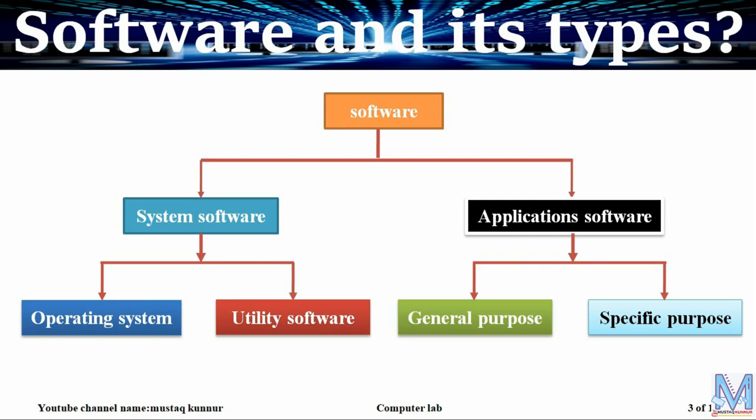System software is further categorized into two types: operating system and utility software. Application software is categorized into two types: general purpose and specific purpose. We will see each one by one.